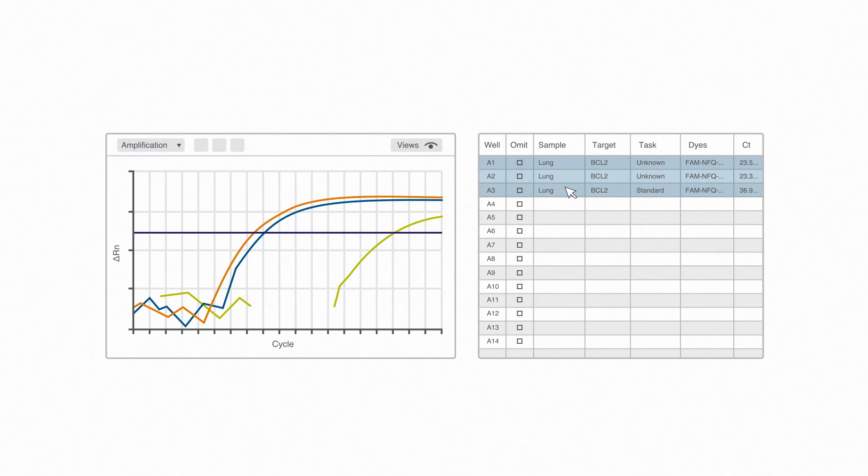But that is not a problem. With triplicates, we can clearly say that the CT of 37 is an outlier and should be removed. I simply click to omit, update my data by clicking Analyze again, and voila! I can move on and still use this data point for the sample.